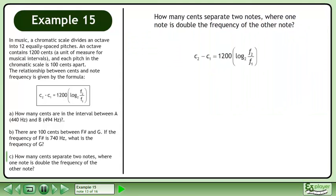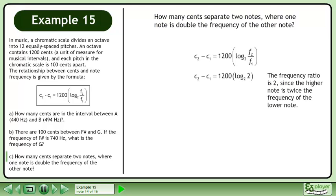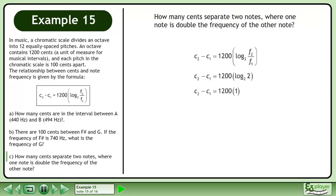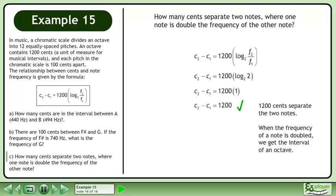Rewrite the cents formula. The frequency ratio is 2, since the higher note is twice the frequency of the lower note. The base 2 logarithm of 2 equals 1. 1200 cents separate the two notes. When the frequency of a note is doubled, we get the interval of an octave.